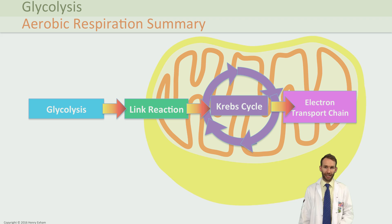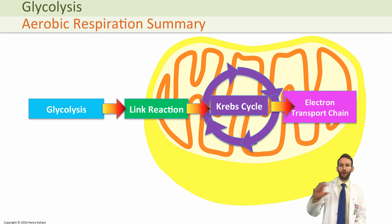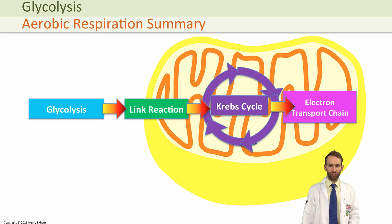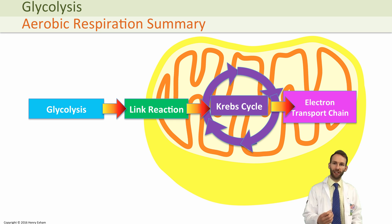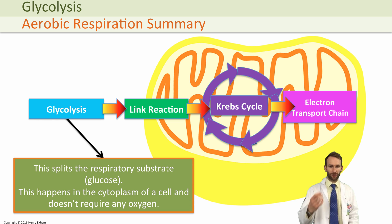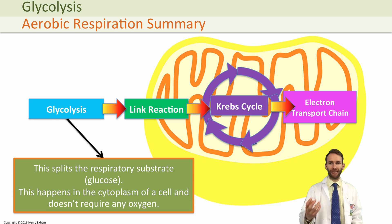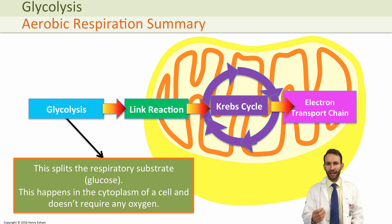The first reaction on this aerobic respiration journey is called glycolysis. What happens in glycolysis is you take the respiratory substrate — in this case glucose — and you split it. It happens in the cytoplasm of the cell, and it's important to remember that it happens in the cytoplasm of the cell.